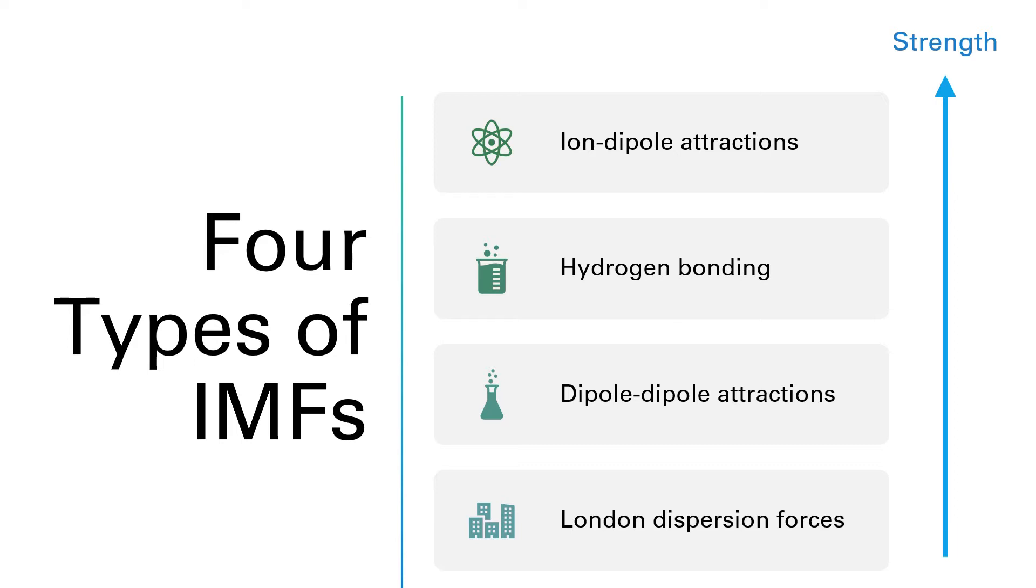It is possible for a substance to have more than one of these intermolecular forces present. In fact, every substance has London dispersion forces present. We'll be evaluating in a later video which of these four intermolecular forces is the strongest one present in a molecule, also called the dominant intermolecular force. Just keep in mind that even if one of these other ones is present and makes it dominant, we still have the London dispersion forces present in that molecule as well.